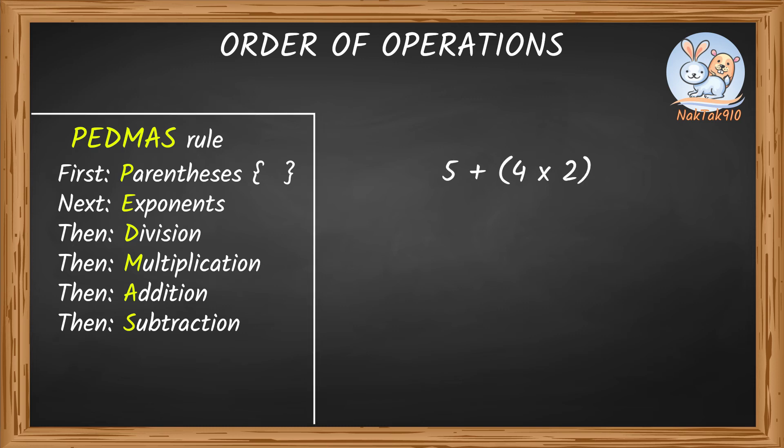5 plus 4 times 2. Here in this example, we have two operations: addition and multiplication. Here we also have parentheses. So we need to do that part first. In parentheses we have 4 times 2, which is 8. Now this becomes 5 plus 8, which gives us 13. 5 plus 4 times 2 gives us 13. Simple, right? We always get the same answer if we follow this order of operations.